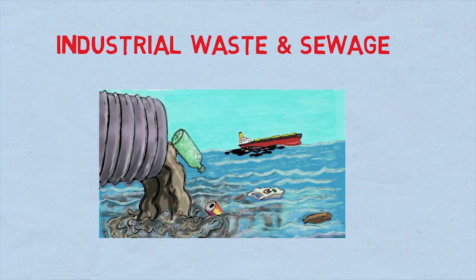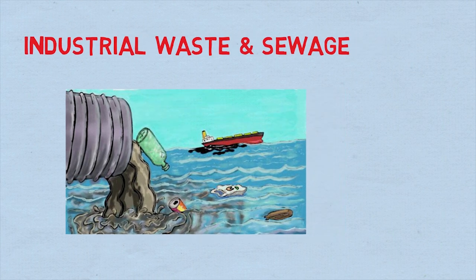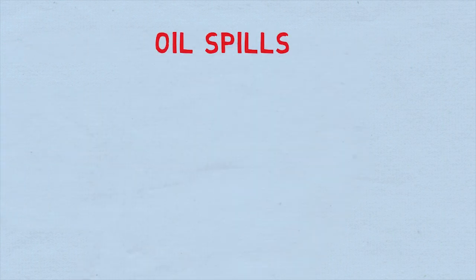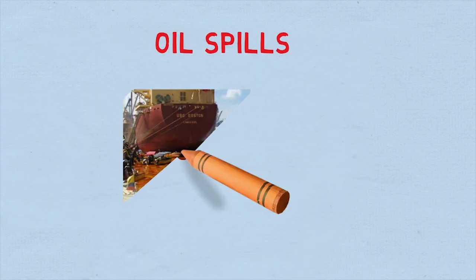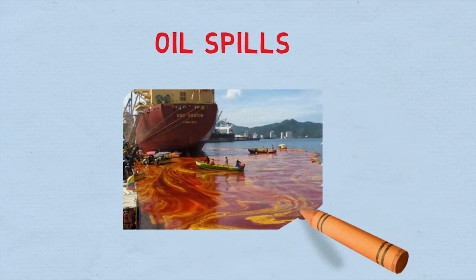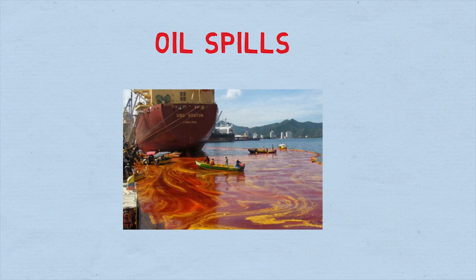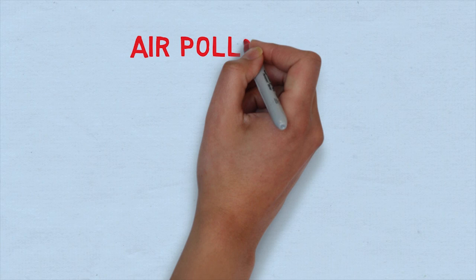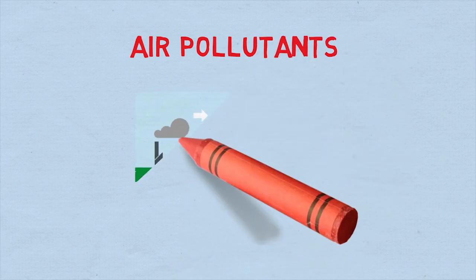Oil spills: when oil is spilled into the ocean, it floats on the water and blocks oxygen from the surrounding environment from entering the water, which is fatal for water animals. Air pollutants are equally responsible for marine pollution.